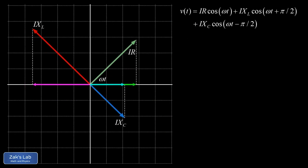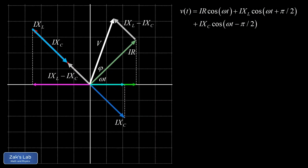We start the vector sum by attaching the capacitor voltage phasor to the head of the inductor voltage phasor, giving a net component perpendicular to the current phasor with magnitude I·X_L − I·X_C. We then slide that vector to the tip of the resistor voltage phasor. The net voltage phasor points from the tail of the first to the head of the last, with magnitude V and phase angle φ relative to the current phasor.